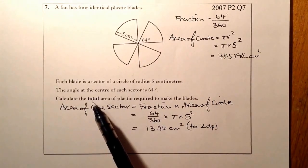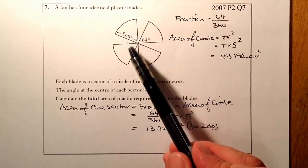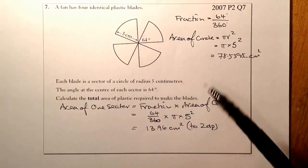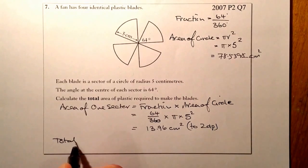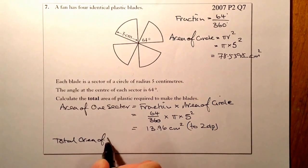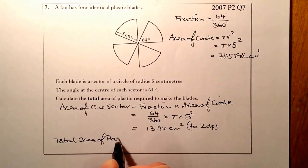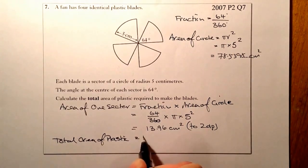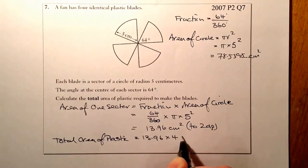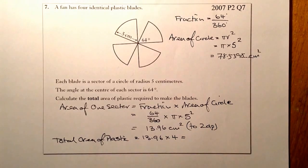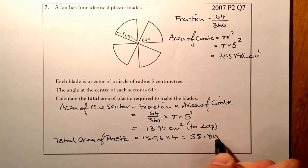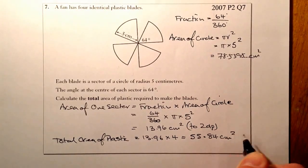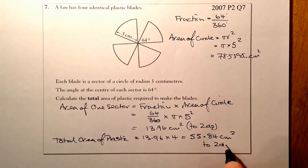Right, so remember it's the total area of plastic that I need. I know there's four blades, so I'm going to multiply that by four. The total area of plastic is 13.96 times four. On the calculator, that gives me 55.84 centimeters squared to two decimal places.